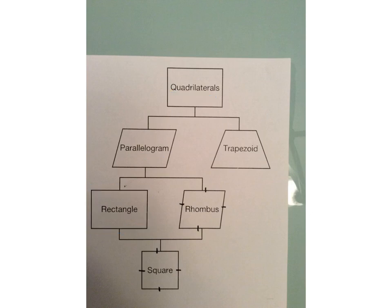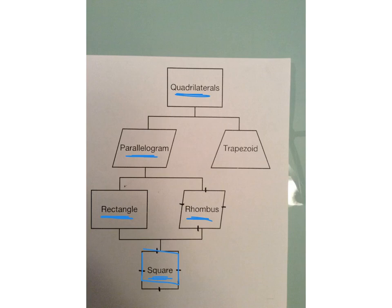Now let's look at the square. A square can also be classified as a rectangle, a rhombus, a parallelogram, and a quadrilateral, because it falls underneath them on the family tree. It's a rectangle because it has two sets of parallel sides and four right angles. It's a rhombus because it has two sets of parallel sides plus four equal sides. It's a parallelogram because it has two sets of parallel sides, and it's a quadrilateral because it's a polygon with four sides.